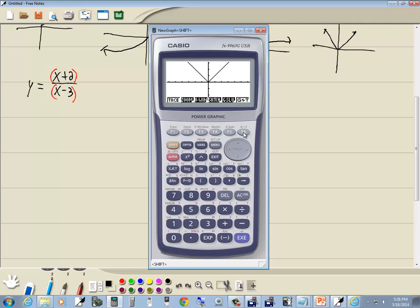So, I'm going to do shift, F6, up arrow to Y1. And then I'll do beginning parentheses, X plus 2. Closing parentheses, divided by beginning parentheses, X minus 3. Closing parentheses, and then EXE. And then I want to choose draw, so F6. And this gives us our graph.